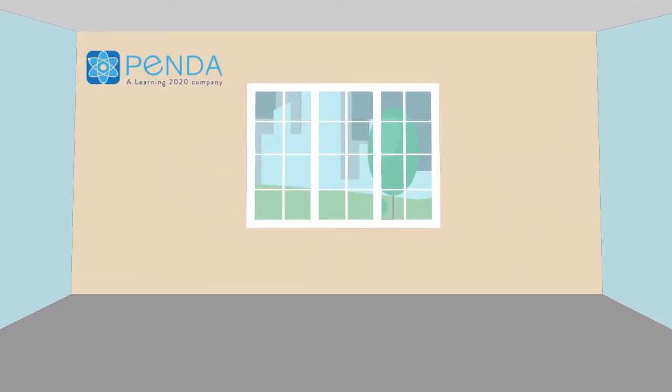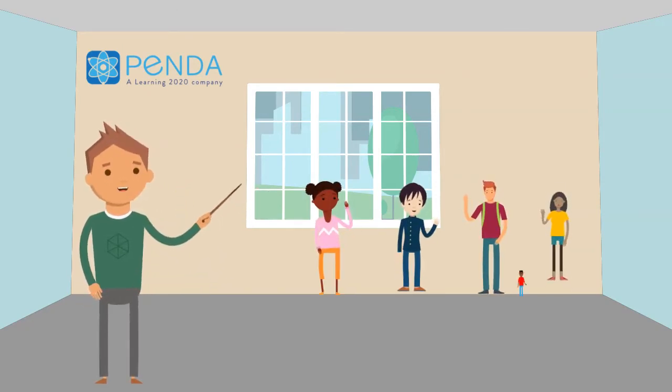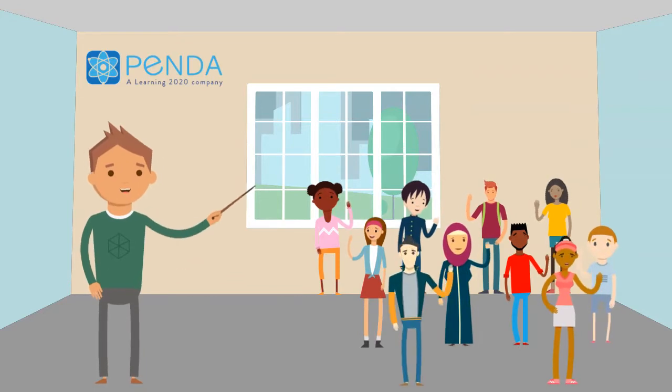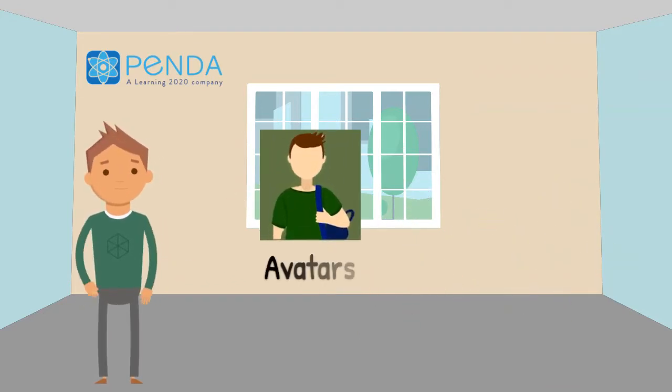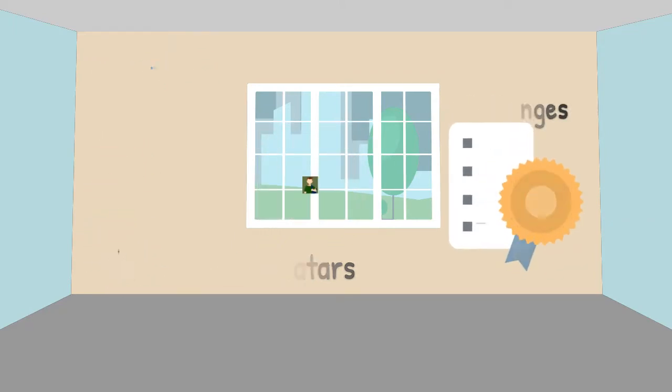When students first sign into Penda, they will select an avatar that best represents themselves. They'll also select up to 10 buddies or friends in their respective grade level that they wish to challenge. These are just two aspects of the game mechanics built into Penda.